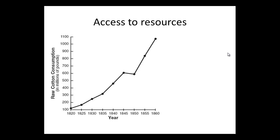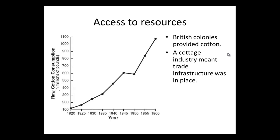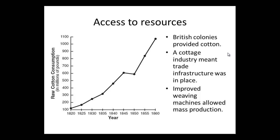Why were these places in the right position? British colonies provided cotton in the first place, and the cotton industry already had a trade structure set up — infrastructure, ships moving between places. When weaving machines were suddenly produced, they allowed mass production. Although there was an initial structure already in place, these weaving machines were able to produce a much bigger output of woven cotton. Raw cotton was available from the British colonies, so that allowed this market to expand and expand and expand.